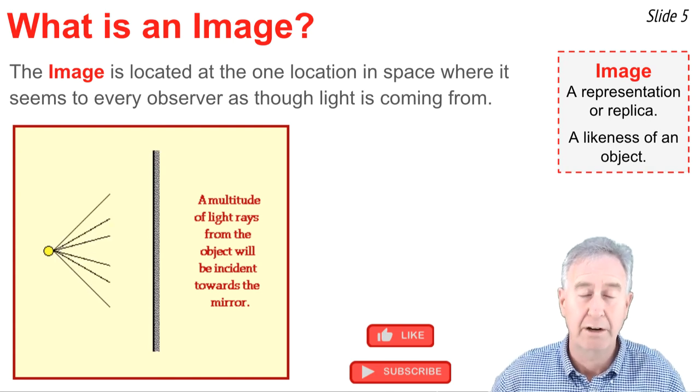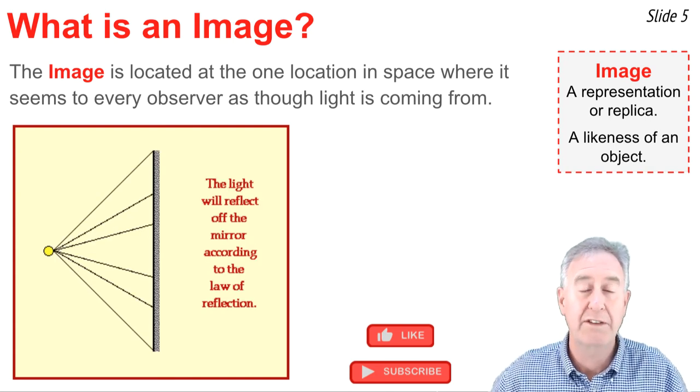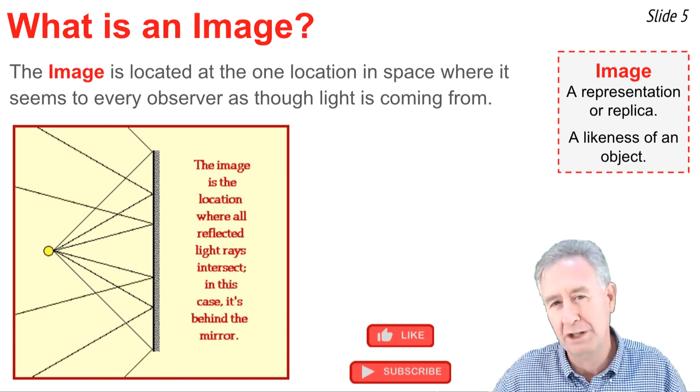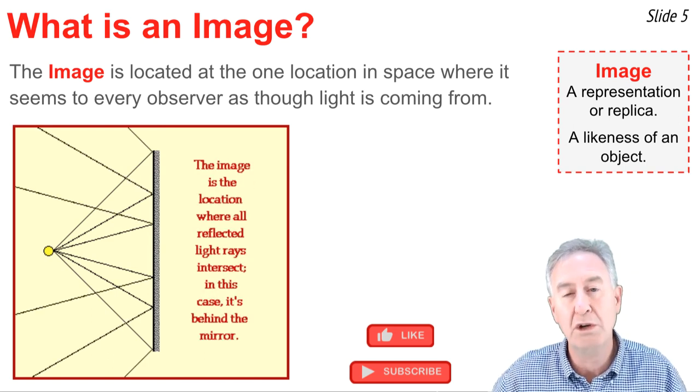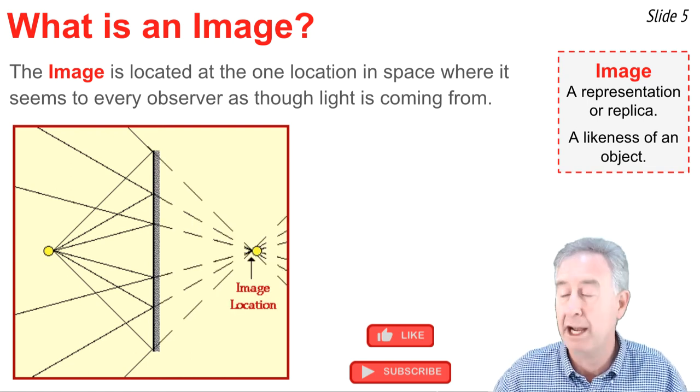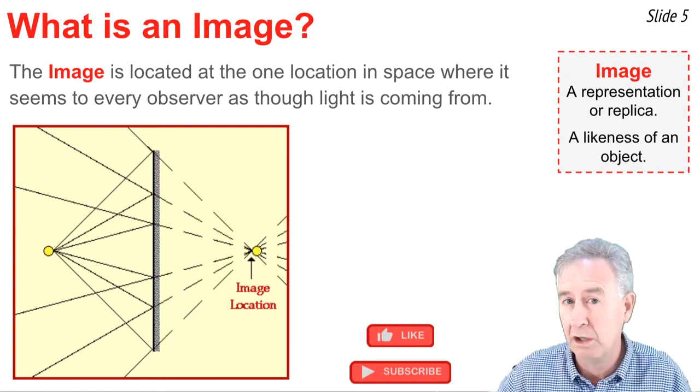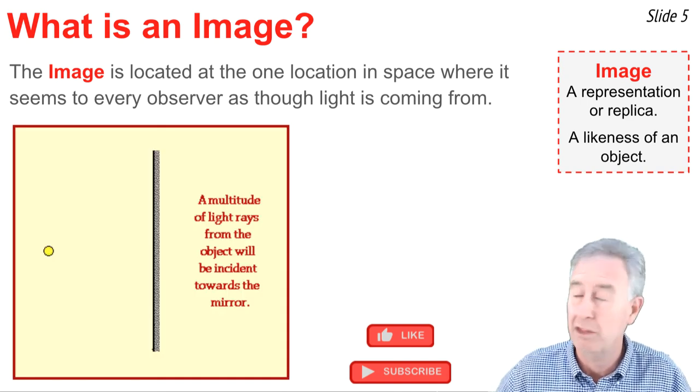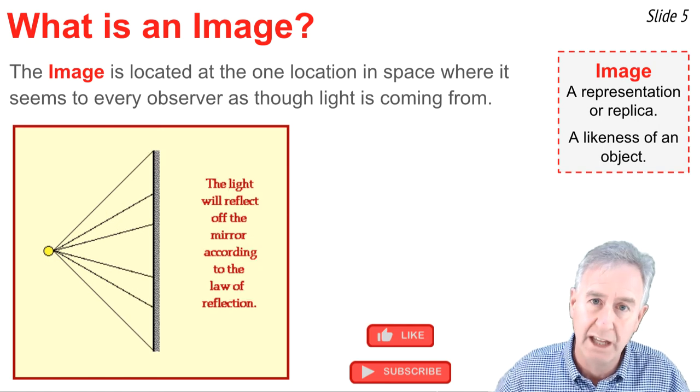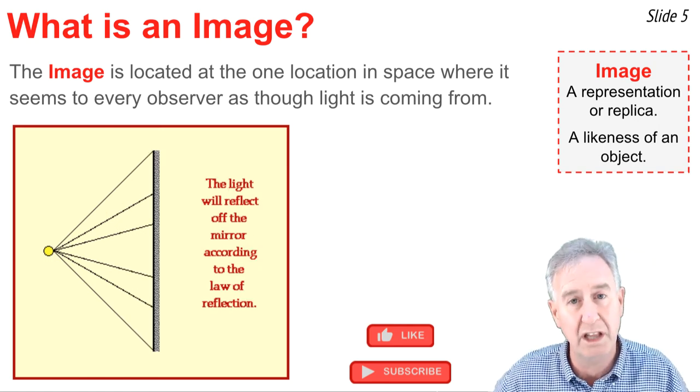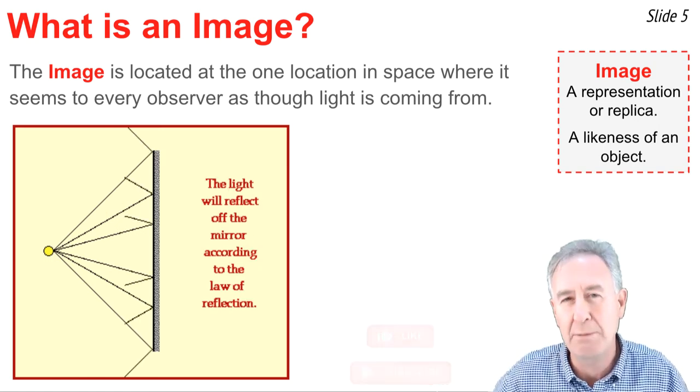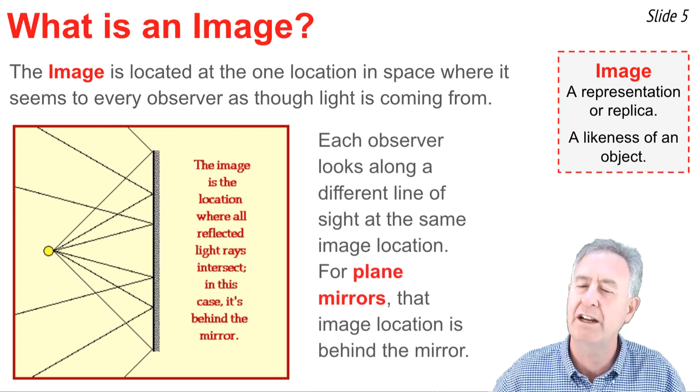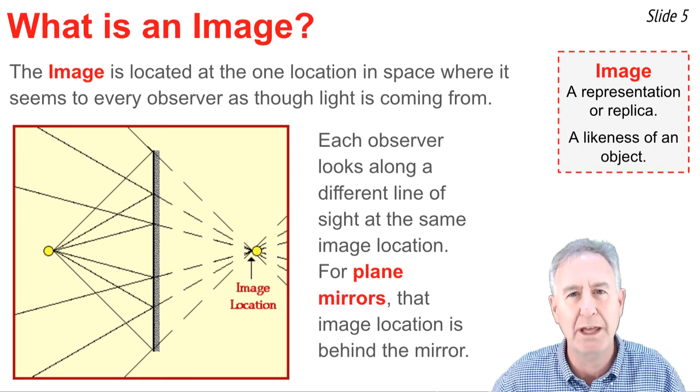Here's an object in a mirror. When you turn the light bulb on, light's given off in all sorts of directions. Some of the light hits the mirror, and then it reflects according to the law of reflection. And if you took one of the reflected rays, or all of them, and extended them backwards, they would intersect at the location where the image is located. In other words, an observer looking at this light bulb would have to look along a line of sight that extends backwards along the line of the reflected ray to the image location. So I like to say that each observer would be looking along a different line of sight at the same image location.